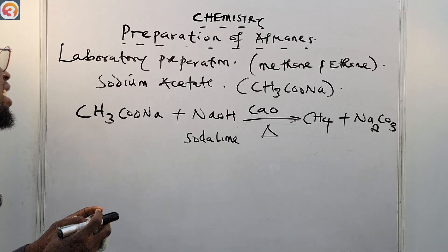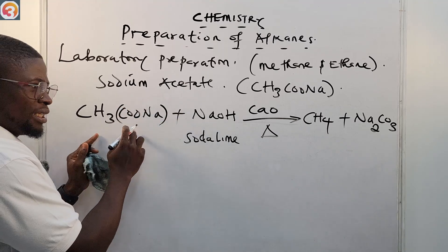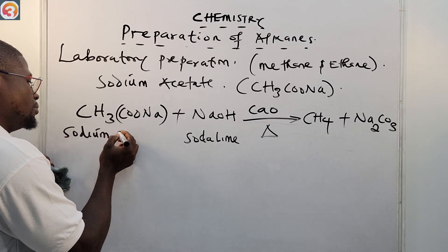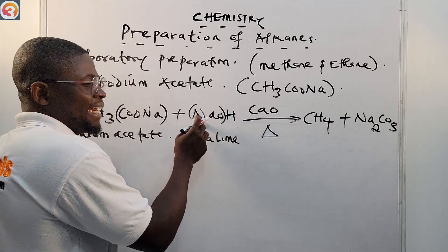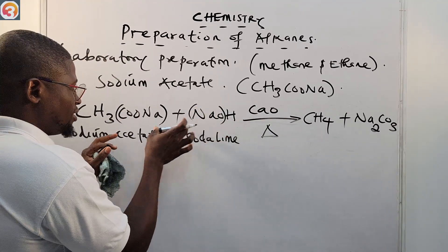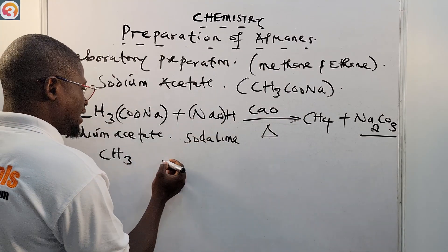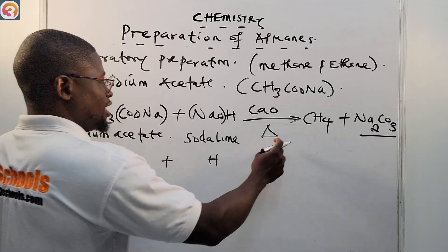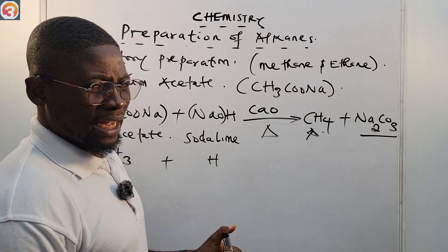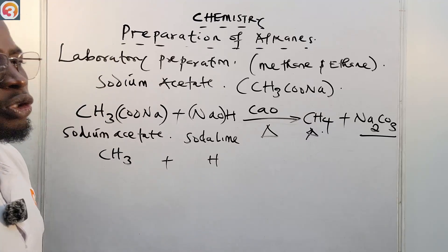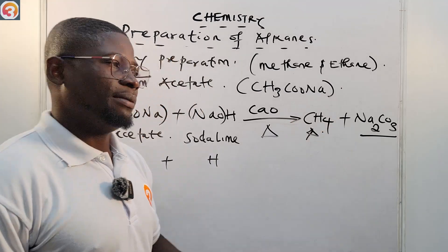What happens in this reaction is that the COONa from sodium acetate reacts with the Na from NaOH to give us sodium carbonate (Na₂CO₃). What is left is the CH₃ group and H, which combine to give us CH₄ — methane. That is one way we can prepare methane in the laboratory.